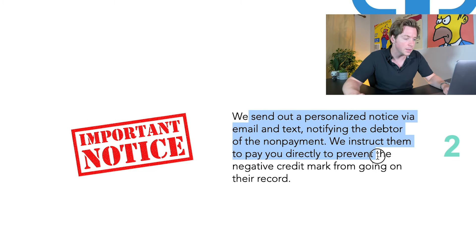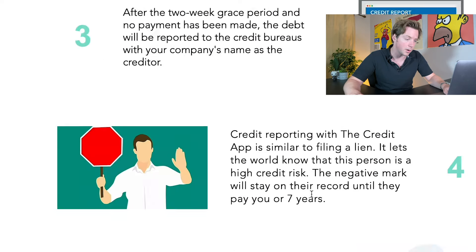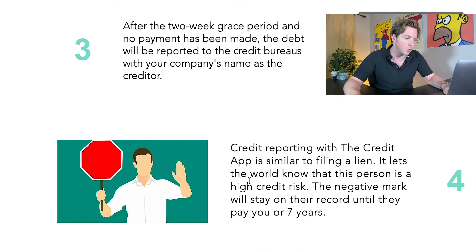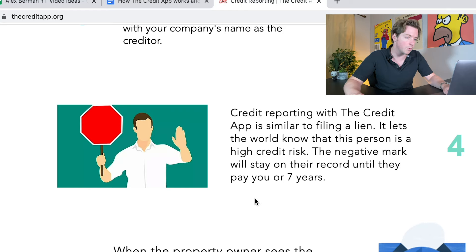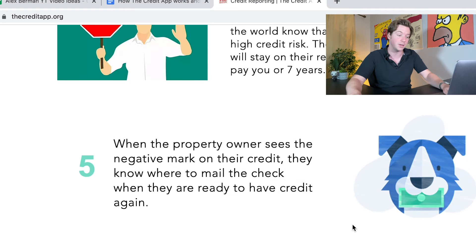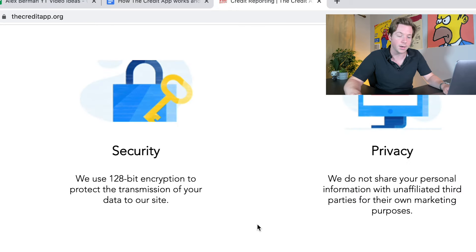So you upload the information and documents of the customer that is in default. They send out a personalized notice via email and text notifying the debtor of non-payment, and instruct them to pay you directly to prevent the negative credit mark. After a two-week grace period, the debt will be reported to the credit bureaus with your company name as the creditor. Credit reporting with the credit app is similar to filing a lien — it lets the world know that this person is a high credit risk. The negative mark will stay on the record until they pay you or seven years.